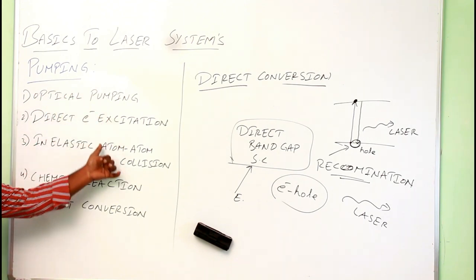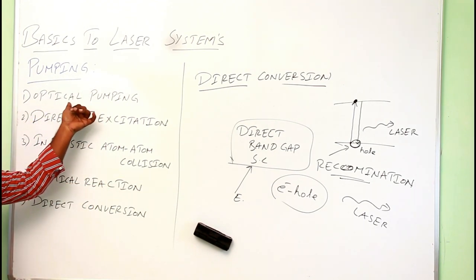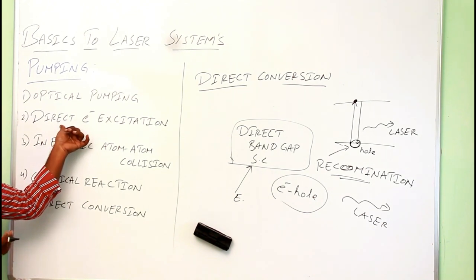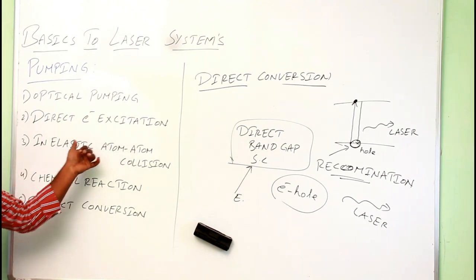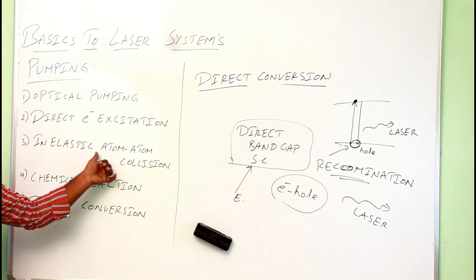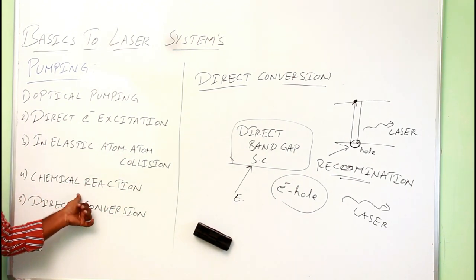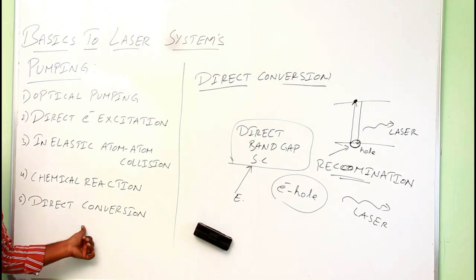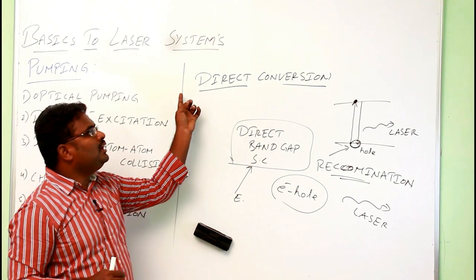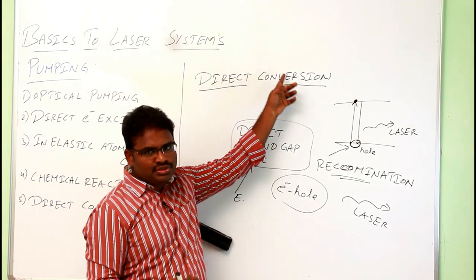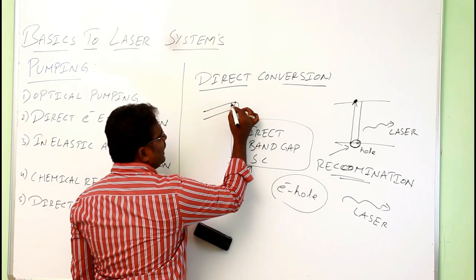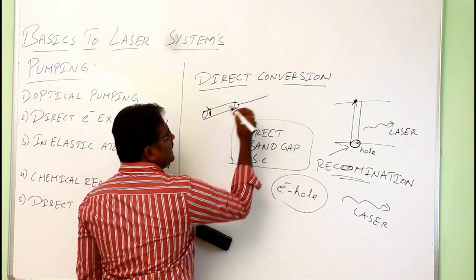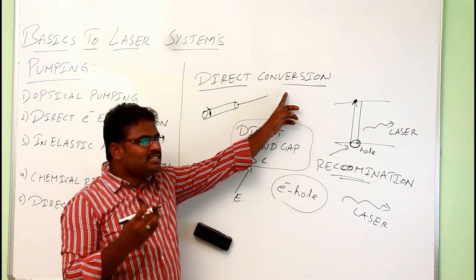To summarize the different types of pumping: using a photon to raise the atom is optical pumping; colliding an atom with a fast-moving electron is direct electron excitation; colliding one atom with another is inelastic atom-to-atom collision; exciting an atom by means of a chemical is chemical reaction; and supplying direct electrical energy to semiconductors is direct conversion. Most common lasers — such as an ordinary laser pointer — are based on direct conversion, where pressing a button supplies battery energy directly to produce laser light.